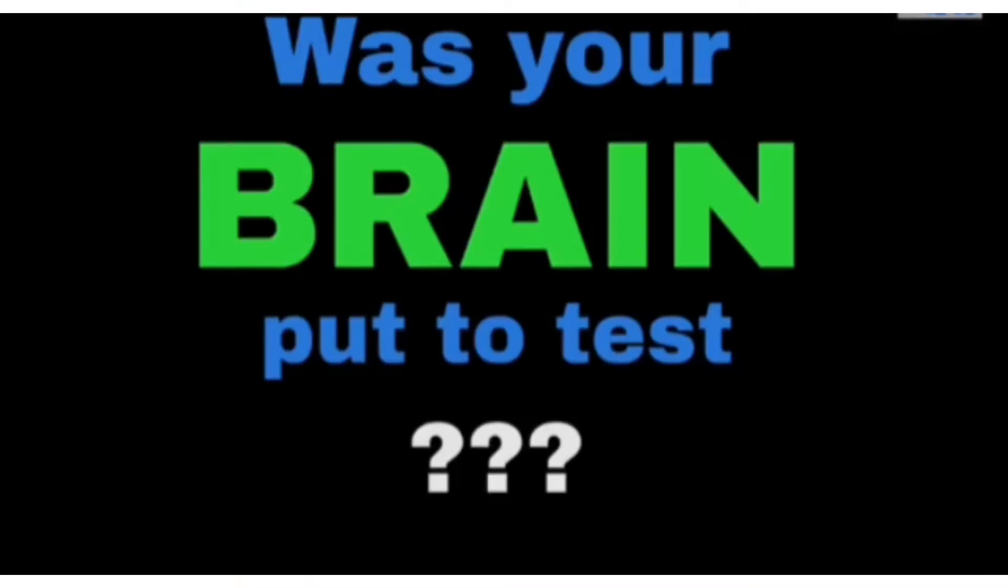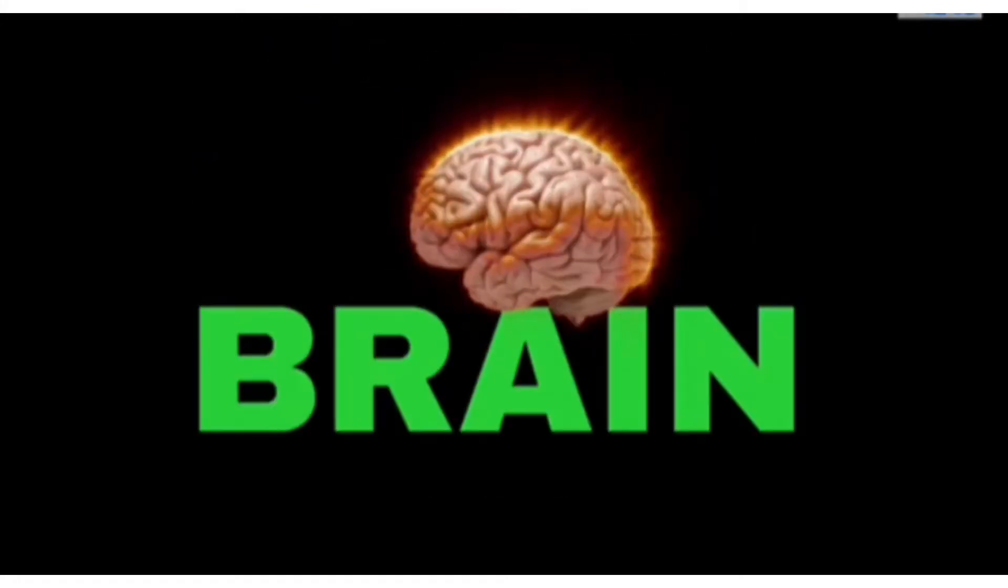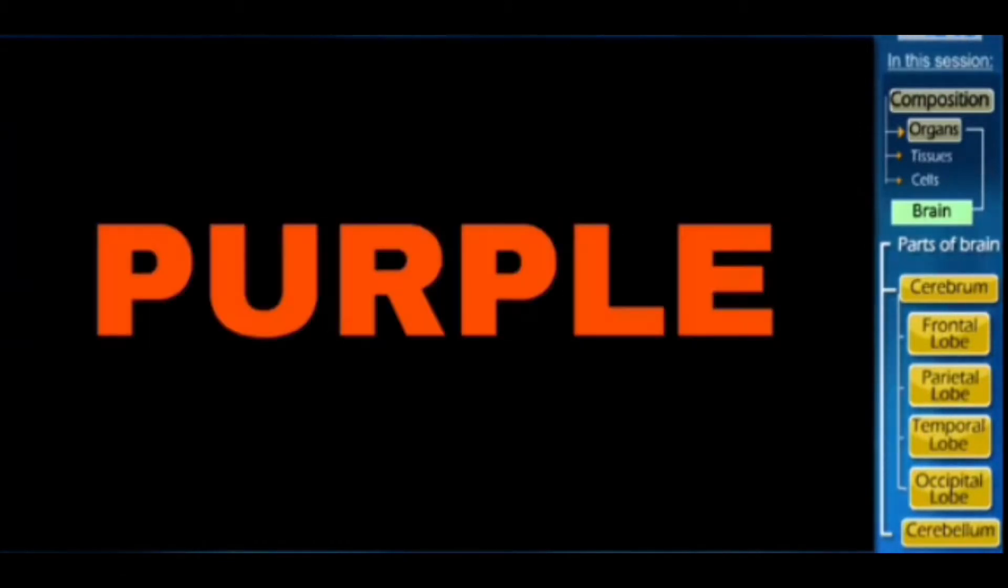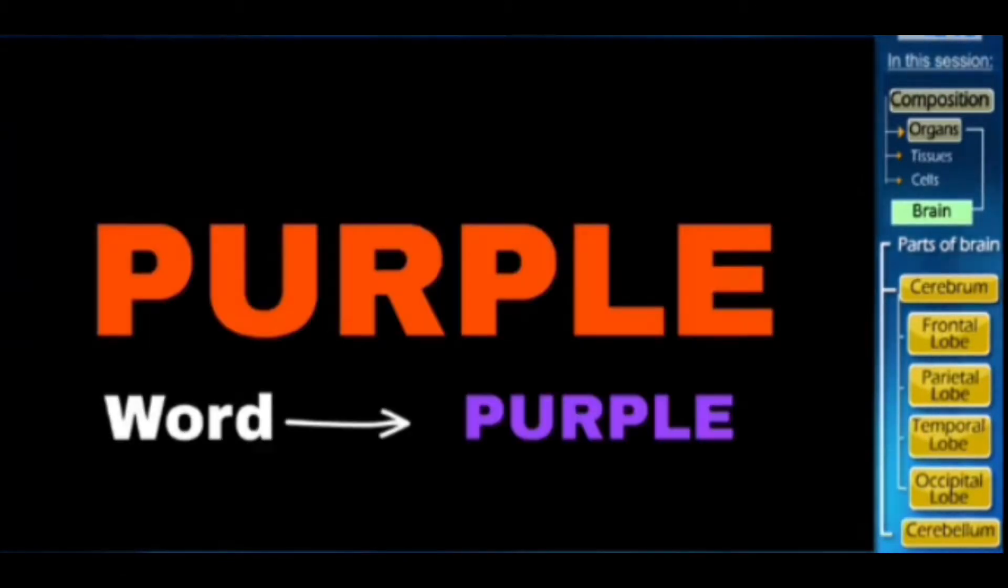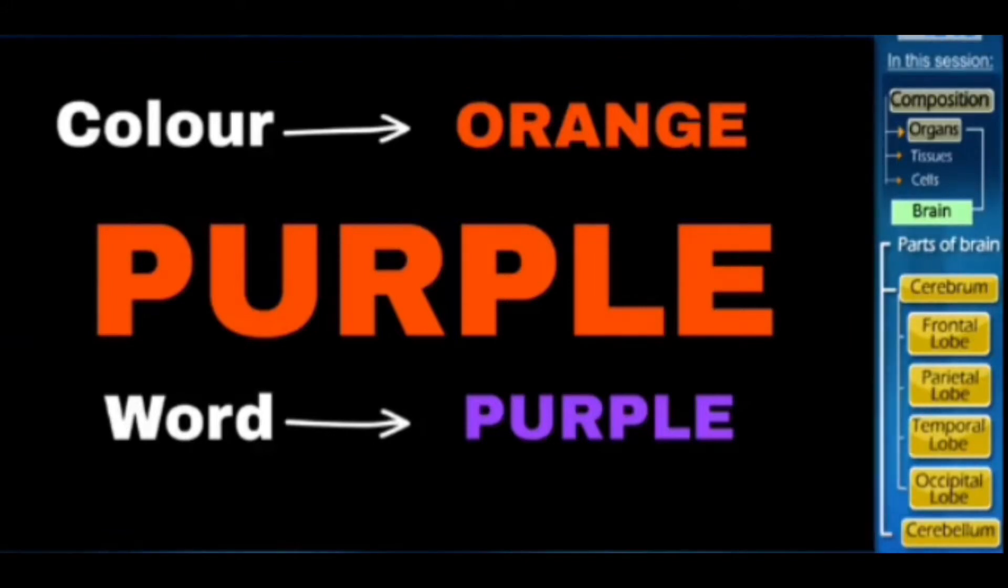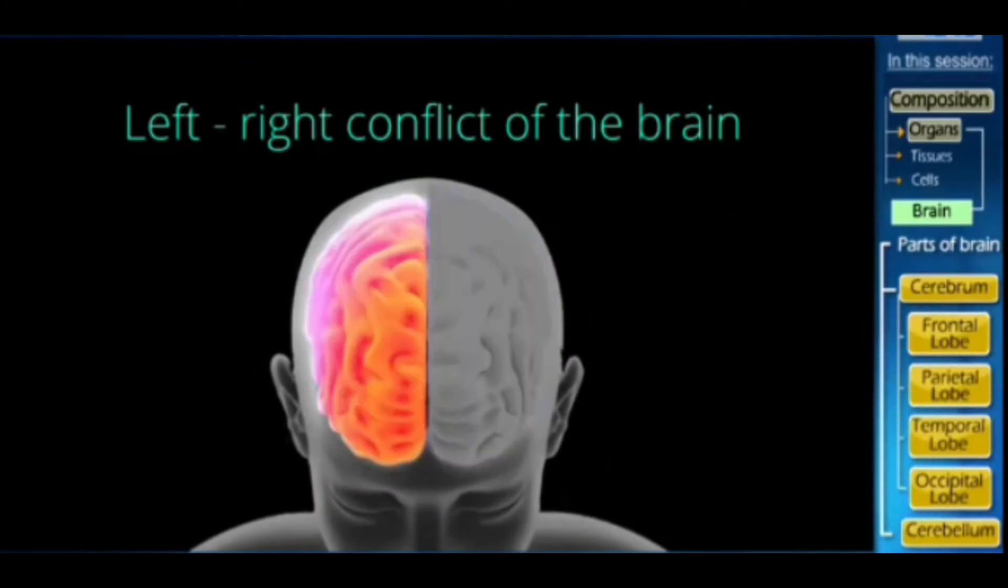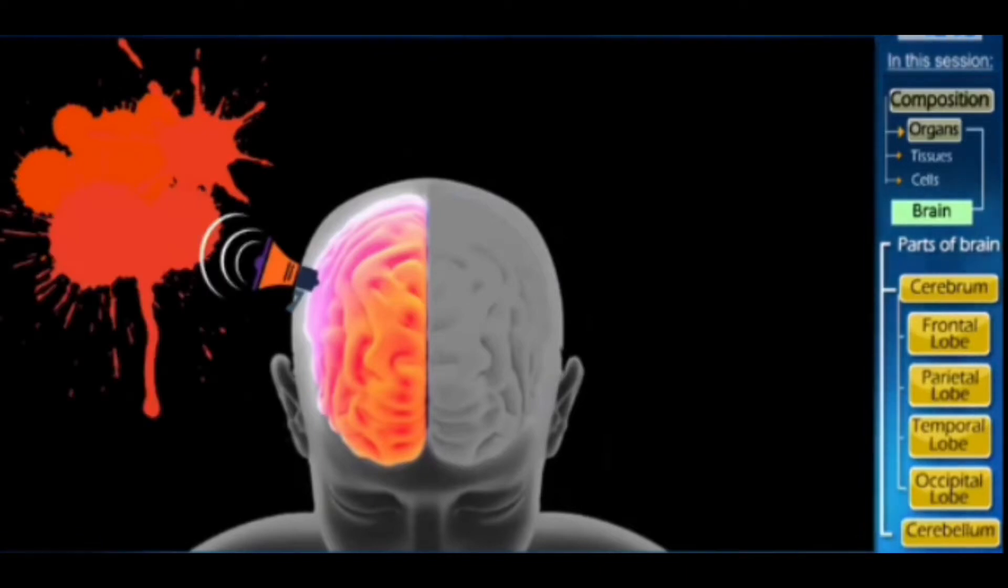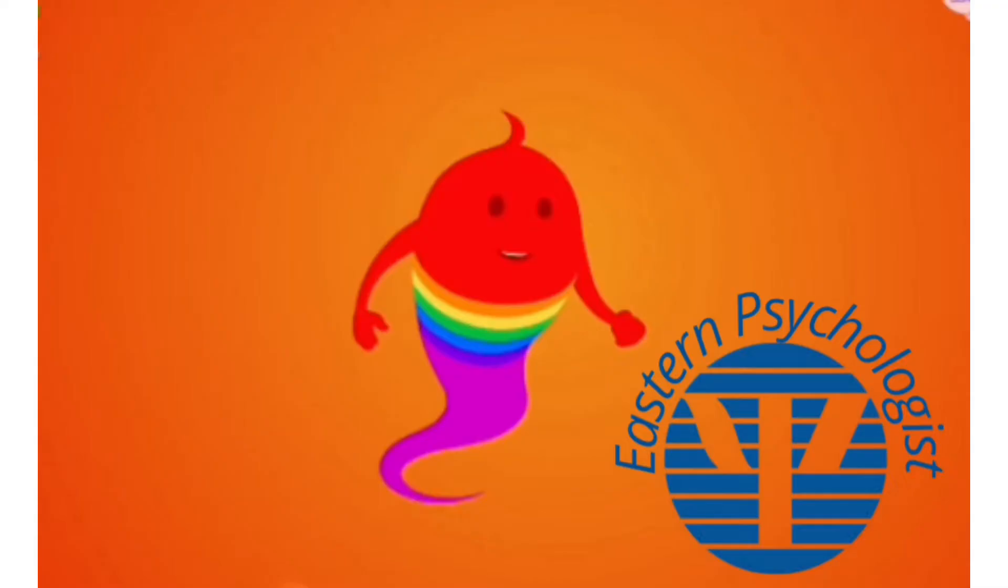Was this confusing? Was your brain put to test? I know it was. So today let's learn about the important organ of our body, the brain. While playing that game, if you accidentally read the word and not spoke out the color, don't worry, it's normal. It's called the left-right conflict of the brain. Your right side of the brain tries to say the color and your left side of the brain insists on reading the word.